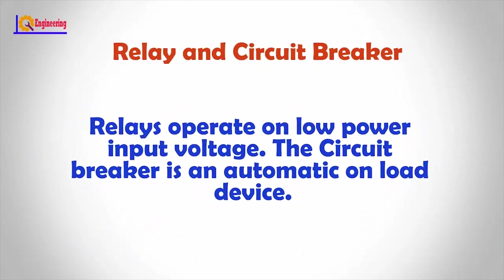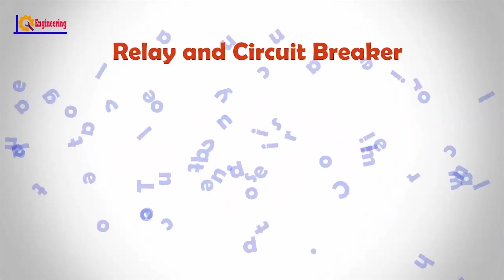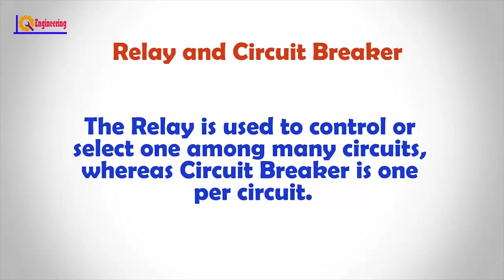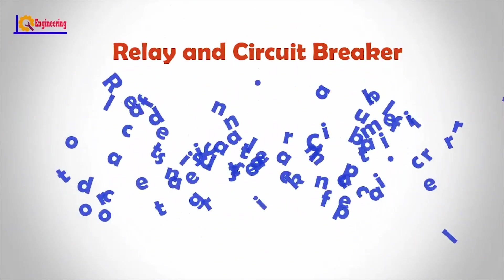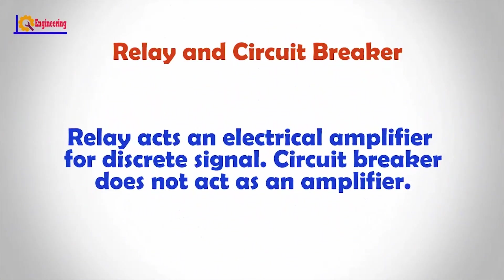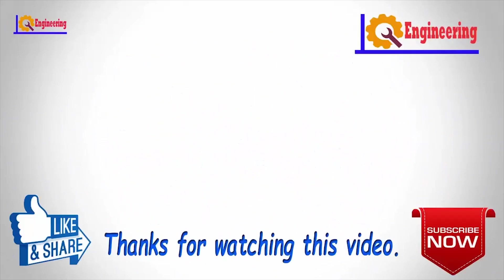Relays operate on low power input voltage. The circuit breaker is an automatic unload device. The relay is used to control or select one among many circuits, whereas the circuit breaker is one per circuit. Relays act as an electrical amplifier for discrete signals, while the circuit breaker does not act as an amplifier.